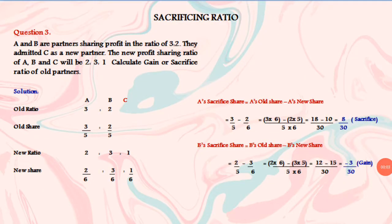Any sacrificing ratio question. A and B are partners sharing profits in the ratio of 3 is to 2. They admitted C as a new partner. The new profit sharing ratio of A, B and C will be 2 is to 3 is to 1. Calculate gain or sacrifice ratio of all partners.